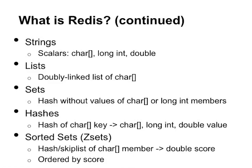Redis also has sorted sets, which are really a combination of a hash and a skip list that maps to character members and double scores. Z-sets are ordered by score, so you can reference things by their member name or access them by the order of member scores. If you're looking to build a sorted index, this is what you'd use. With a combination of these structures you can build somewhere on the order of 75 to 90% of the functionality of relational databases including indexing.